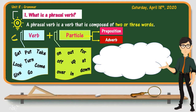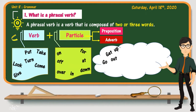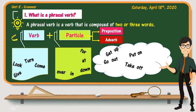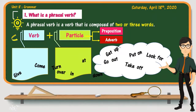Let us now make examples from the listed verbs and particles. Examples include: get up, go out, put on, take off, look for, turn down, and we can make others like come in, give in, and many more.